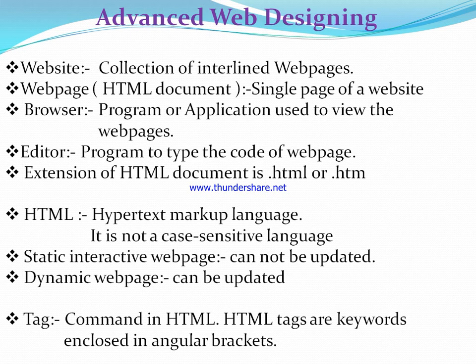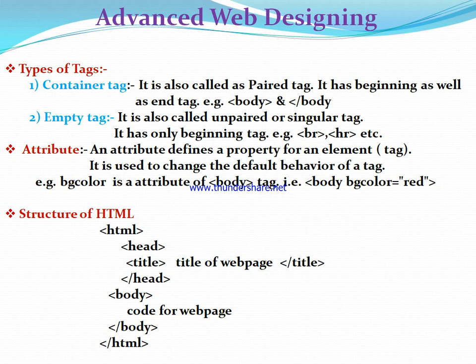The most important point of HTML language is the tag. HTML tags are keywords enclosed in angular brackets, or they are the commands provided by the HTML language. Tags are written inside angular brackets. There are two types of tags in HTML: container tag and empty tag. A container tag is also called a pair tag, meaning it has a beginning as well as an end tag. For example, body and /body. The end tag contains a forward slash. So body and /body together are referred to as container tags or pair tags.